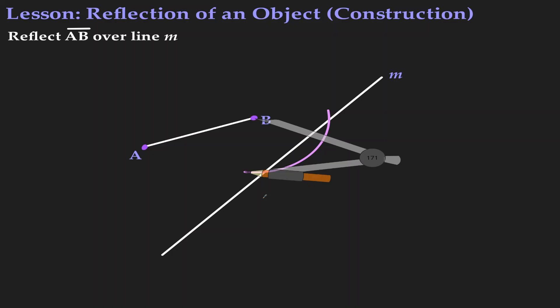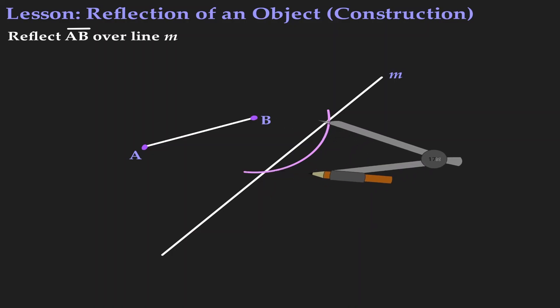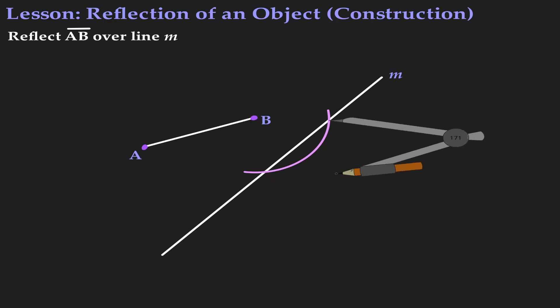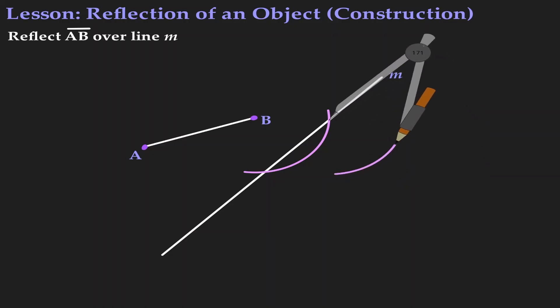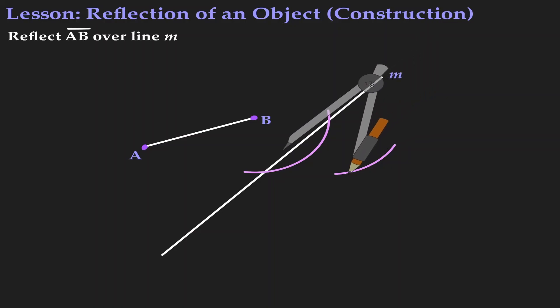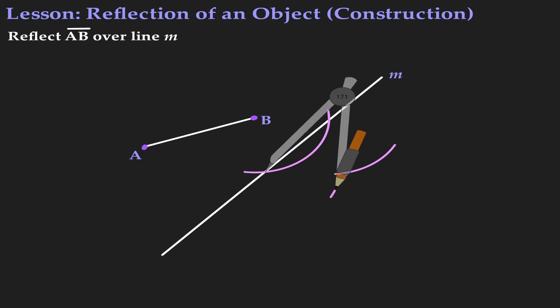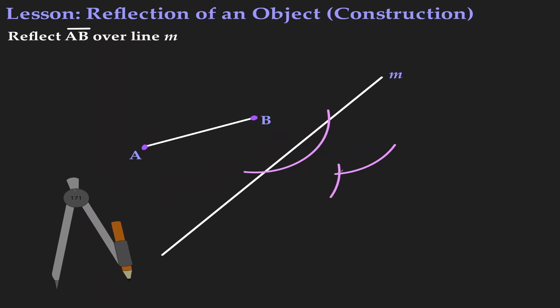Without changing the length of the compass, I'm going to move my metal leg to the first intersection and create a mark on the inside. Now let's move the metal leg to the second intersection and, using the same distance, look for the intersection on the inside. At the intersection we've just found, this is where the image of B is going to be located — so let's call it B'.